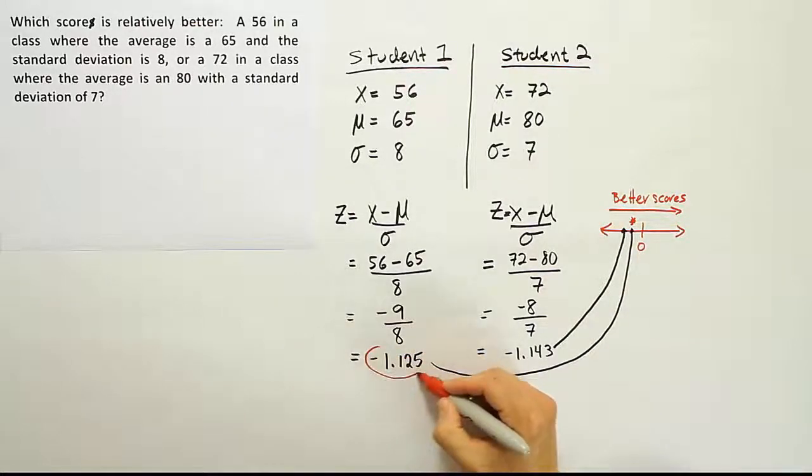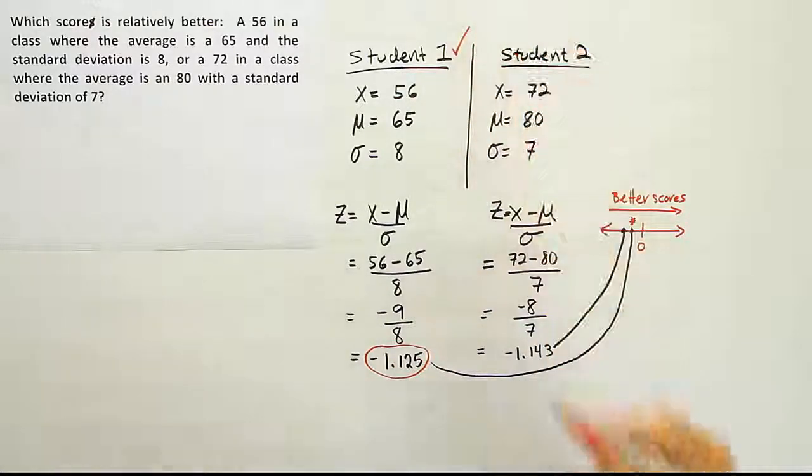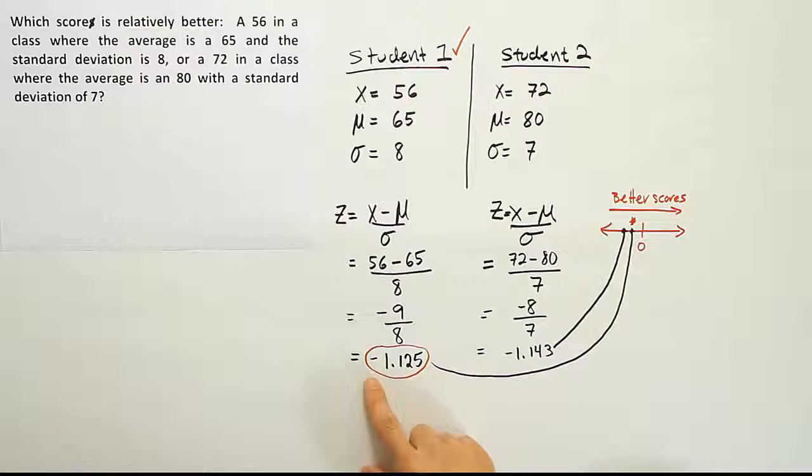So we're going to say that this number is actually the better score, so student 1 is the winner. Look at their values. Neither one of them did unusually poor on the test. They both did below average, which is reflected by the negatives, but this guy just did a little less below average than this guy. Neither one of them is unusually below average. Neither one of them got below two standard deviations below average. But certainly, he's a little bit higher than this guy, so student 1 is the winner.